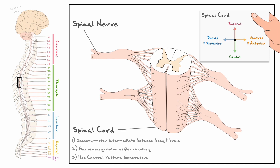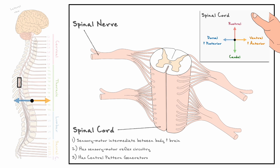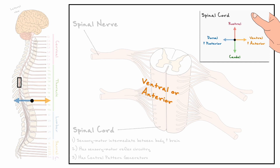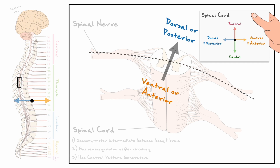For the spinal cord, the direction towards the brain is rostral and the direction away is caudal. On the other axis, towards the back is dorsal and towards the belly is ventral. Additionally, the dorsal side is also known as posterior and the ventral side is also known as anterior. The important axis we will consider here is the dorsal to ventral or posterior to anterior axis. In the diagram, the side of the spinal cord closest to us is on the ventral or anterior side, and it goes towards the dorsal or posterior side. Everything near us will be suffixed by ventral and away by dorsal.